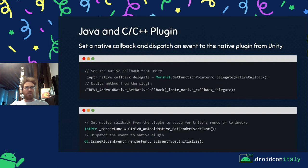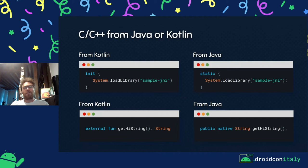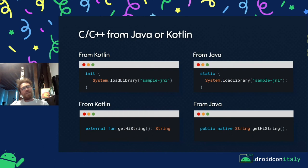When building from Kotlin or Java and wanting to use a C++ library inside your Java or Kotlin library, don't forget to use System.loadLibrary. Without it, the .so and all methods from your C++ library won't be reachable. For Kotlin, use the `external` keyword to call C++ methods. In Java, use the `native` keyword to call C++ methods.